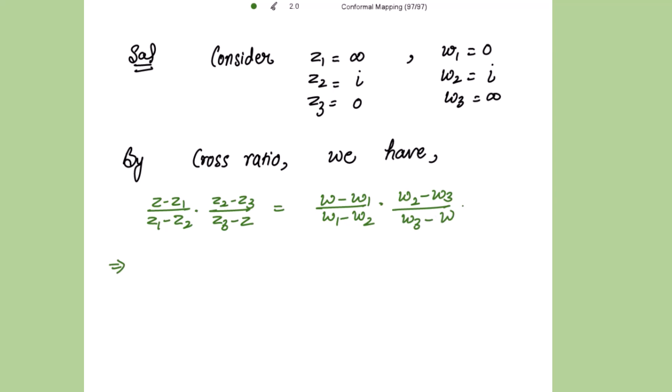Just putting the points, we get z minus infinity over infinity minus iota into iota minus 0 over 0 minus z. This is equal to w minus 0 over 0 minus iota into iota minus infinity over infinity minus w.